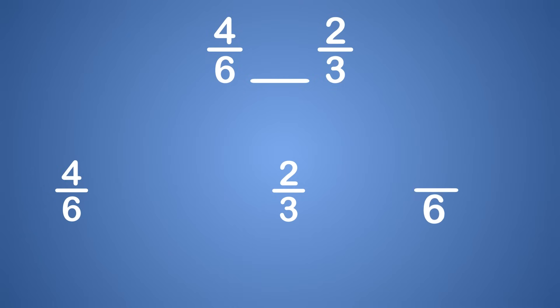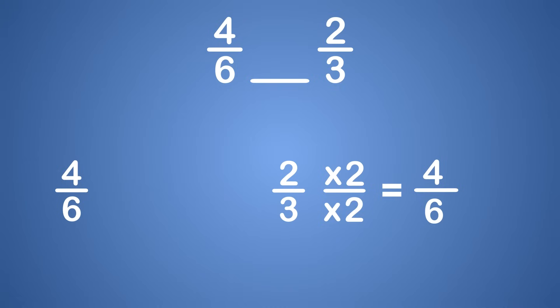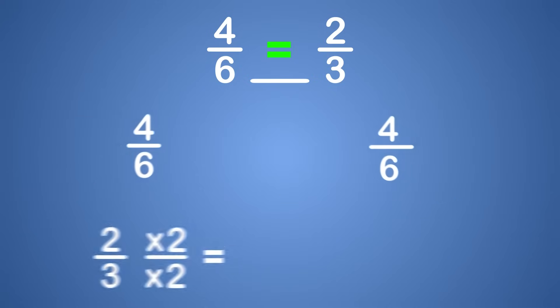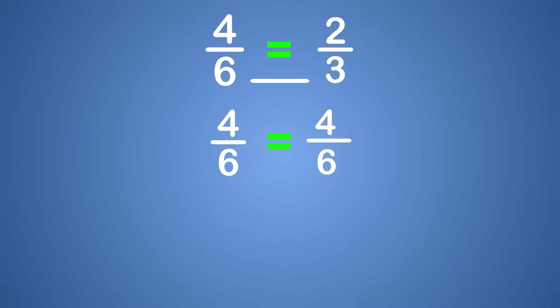Let's change 2 thirds into an equivalent fraction with a denominator of 6. What number times 3 is 6? That's right, 2. Let's multiply both the numerator and denominator by 2. 2 times 2 is 4, and 3 times 2 is 6. We found that 2 thirds is equivalent to 4 sixths. So the fractions we started comparing were 4 sixths and 2 thirds, and after getting a common denominator we are comparing 4 sixths and 4 sixths. Our fractions are the same, which means they are equal.